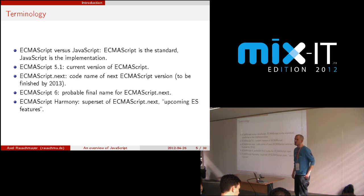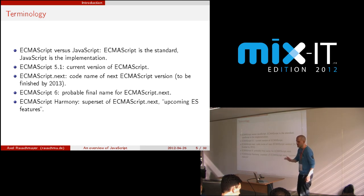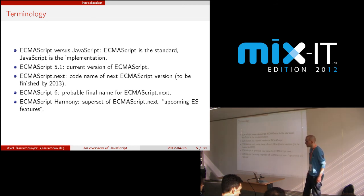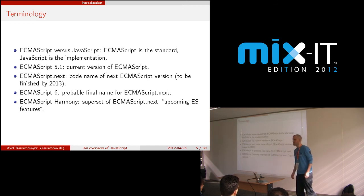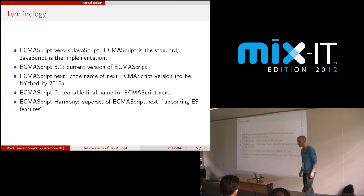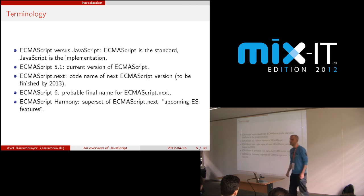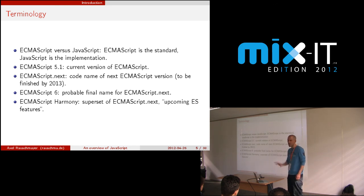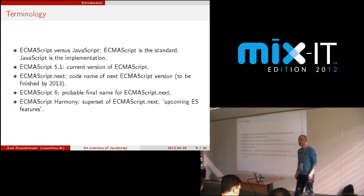ECMAScript 6 is probably going to be the final name for it, but this is always tricky with standards. ECMAScript Harmony is another word for upcoming versions — it's a superset of ECMAScript 6. ECMAScript Next is going to be a very nice cleanup of the language; there are some weird parts of JavaScript and many of those are going to be cleaned up via ECMAScript Next.